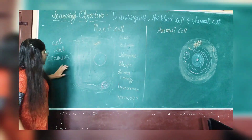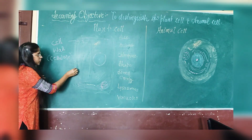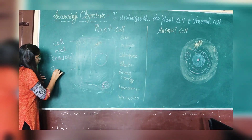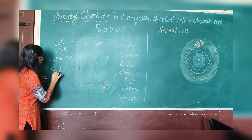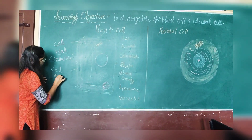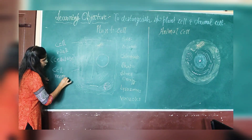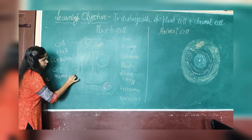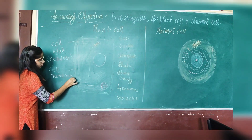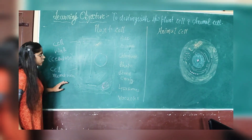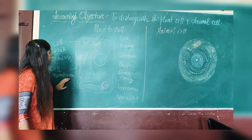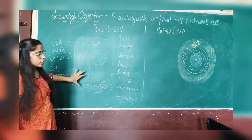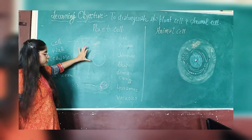Then the cell membrane comes. This is the cell membrane, found after the cell wall. Cell membrane is also known as the plasma membrane of the cell.